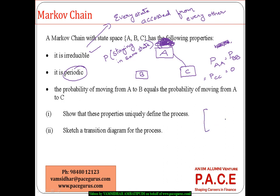Now, looking at the transition matrix for states A, B, C: P(AA)=0, P(BB)=0, P(CC)=0. There is also the statement that the probability of moving from A to B equals the probability of moving from A to C. So P(AB) = P(AC). Since P(AA)=0 and all probabilities must sum to 1, we get P(AB) = P(AC) = 0.5.